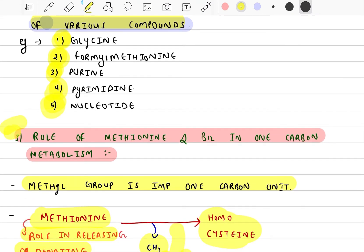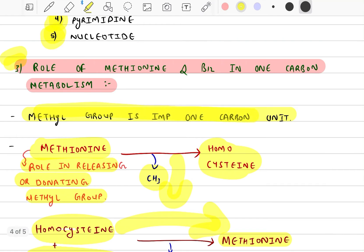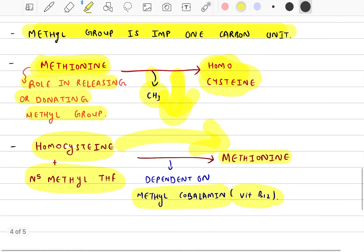Role of Methionine and Vitamin B12 in one carbon metabolism: Methyl group is an important one carbon unit. Methionine is converted into homocysteine when it donates CH3. But homocysteine, when it reacts with N5 methyl THF, which is dependent on vitamin B12, can regenerate methionine.